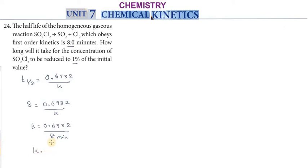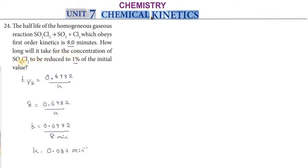So k equals 0.6932 divided by 8, which gives k equal to 0.087 per minute.